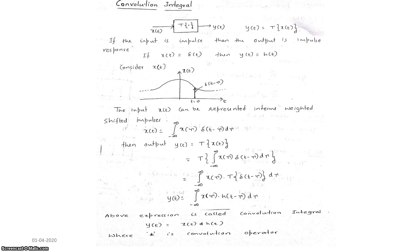The convolution integral is used for continuous time signals. Looking at the output equation y(t), the integral runs from minus infinity to plus infinity, and we multiply the two signals x(tau) and h(t minus tau) and integrate with respect to tau. The steps to solve problems related to the convolution integral are almost similar to those for the convolution sum. First, draw x(tau). Then draw h(t minus tau) by replacing t with tau, apply time reversal to get h(minus tau), apply time shifting based on t, perform multiplication if there is overlap, and then integrate over the appropriate limits.